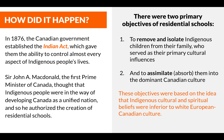There were two primary objectives. One, to remove and isolate Indigenous children from their family, who served as their primary cultural influences. And two, to assimilate or absorb them into the dominant Canadian culture. These objectives were based on the idea that Indigenous cultural and spiritual beliefs were inferior to white European Canadian culture.